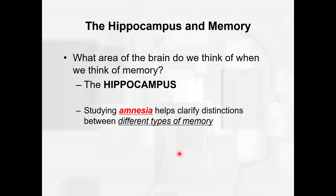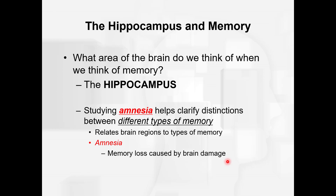Studying amnesia helps us clarify distinctions between different types of memory and relates brain regions to those types. Amnesia is memory loss caused by brain damage. You could turn on the TV and tune into a soap opera where somebody has amnesia and can't remember anything about who they are or their past — that's the Hollywood type of amnesia. What we're going to talk about is amnesia caused by actual brain damage.